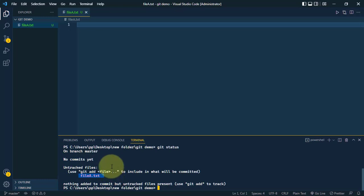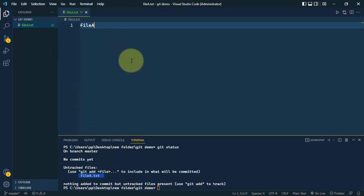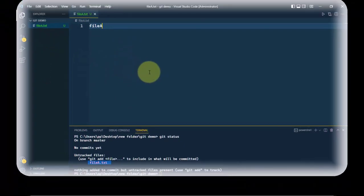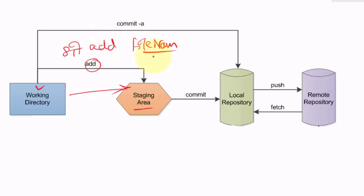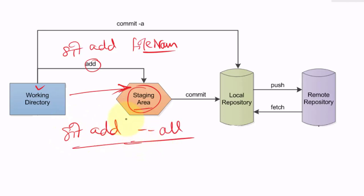Untracked files are files in the working directory that are not added to the repository — git is not currently tracking changes to file-a. To track it, we need to add it to the staging area. We can use git add followed by the file name to add a specific file, or git add --all to add all files to the staging area at once.